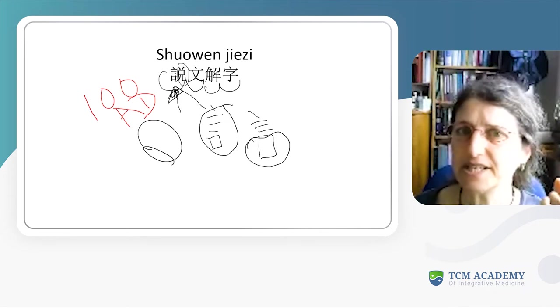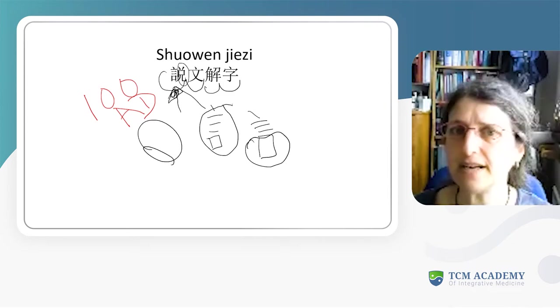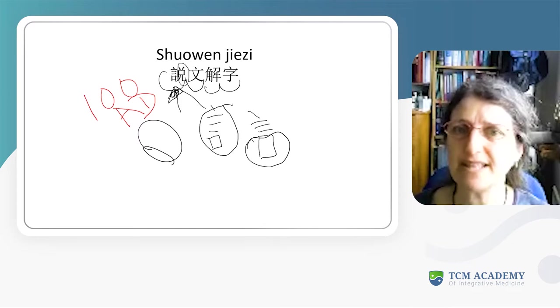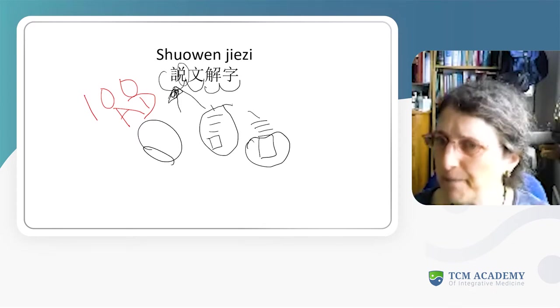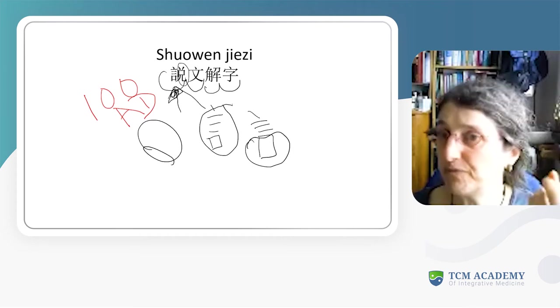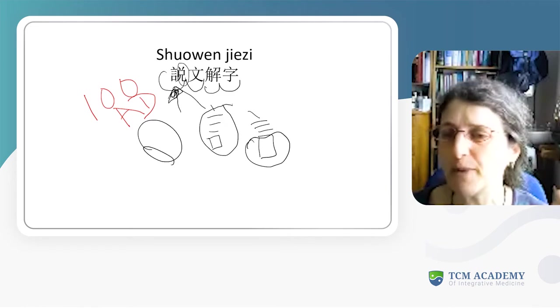Then actually the thing on the right here, this is called the phonetic. It's the thing that often makes the sound of the character. Actually this phonetic here doesn't make the right sound because that's actually the character for dui, which is the trigram for the mouth funnily enough. So this is like two things together that mean speaking or talking about and the mouth.